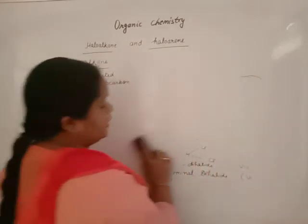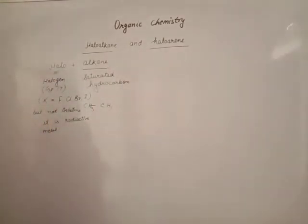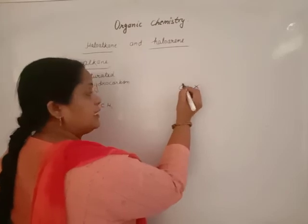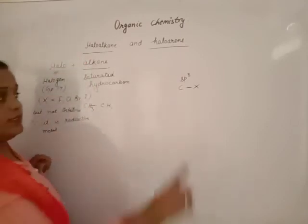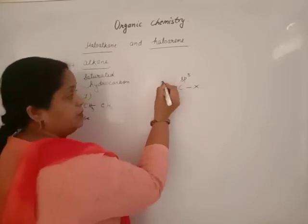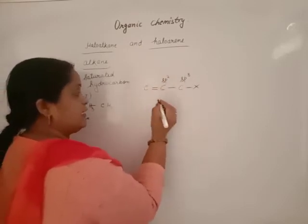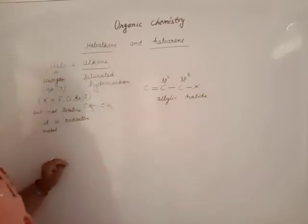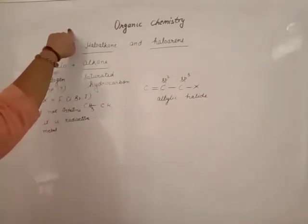Besides this, if three halogens are present it is a trihalide, four is tetrahalide, and so on. One more type: if the halogen group is present on a carbon which is sp3 hybridized but that carbon is attached to an sp2 hybridized carbon, it is known as an allylic halide.